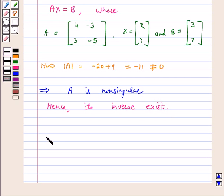Now adjoint A is equal to minus 5, 3, minus 3, 4.